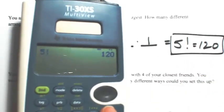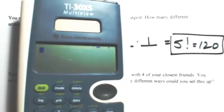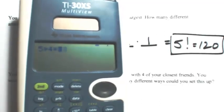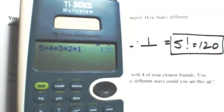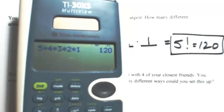Five factorial equals 120. If you don't want to use the factorial button, you can do it the old-fashioned way: five times four times three times two times one. You're going to get the same thing.